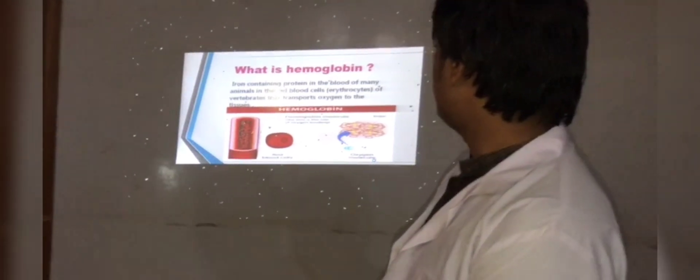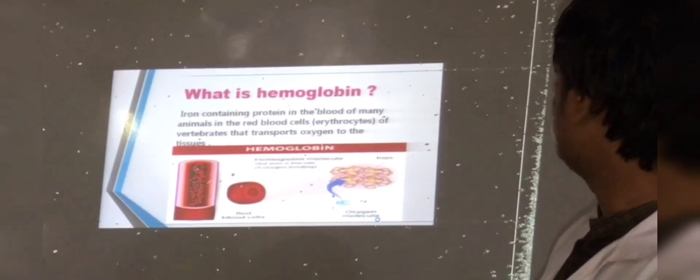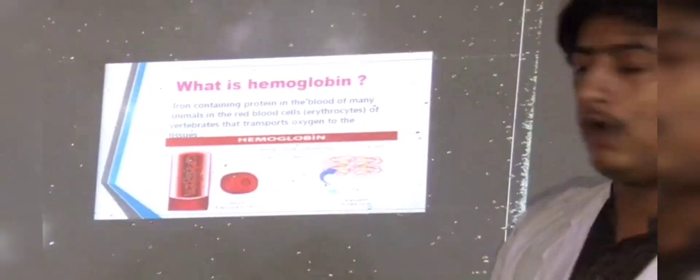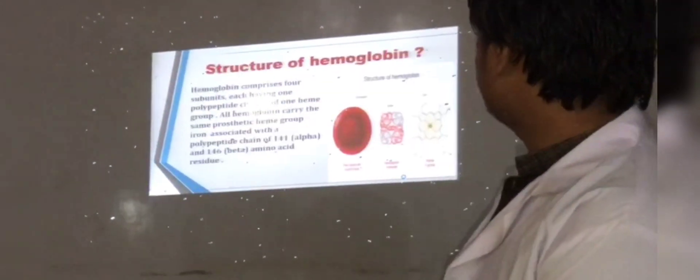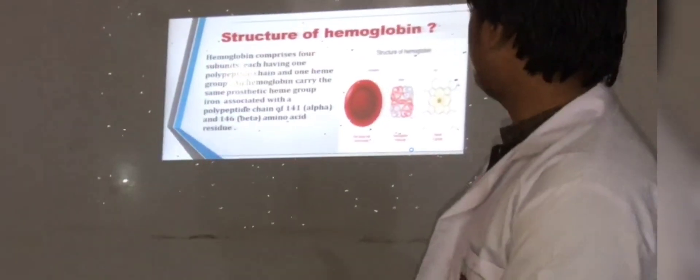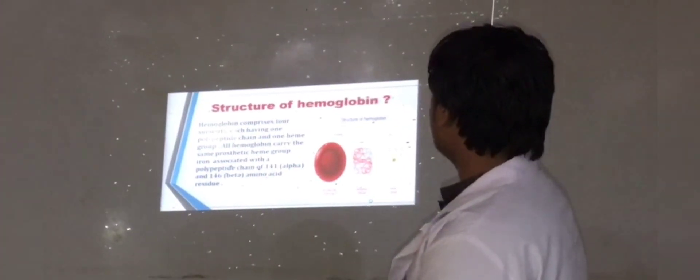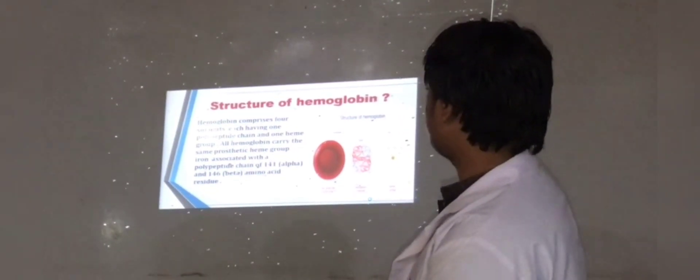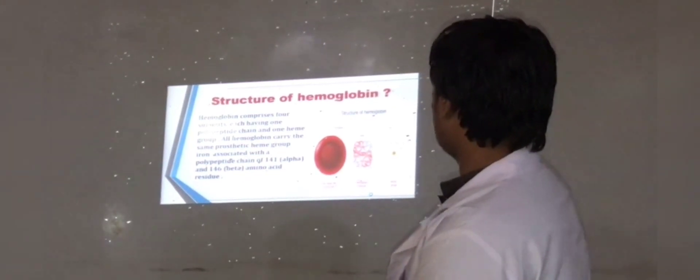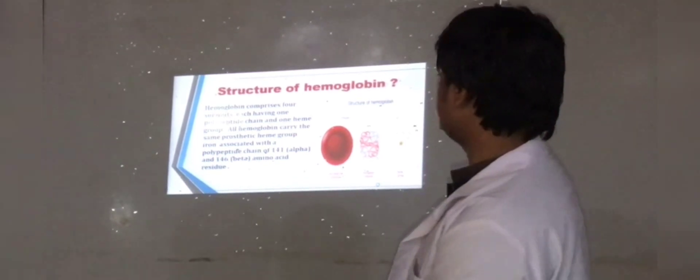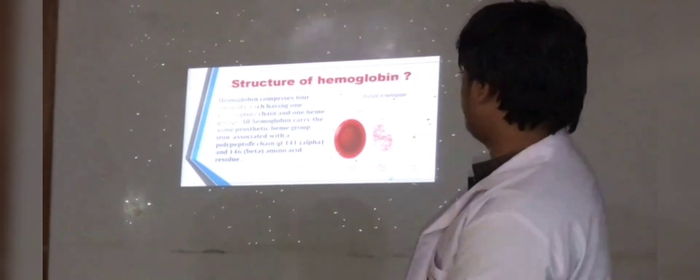What is hemoglobin? Hemoglobin is a protein in the blood of many animals, found in the red blood cells of vertebrates, that transports oxygen to the tissues. Hemoglobin comprises four subunits, each with one polypeptide chain and one heme group. All hemoglobin carry the same prosthetic heme group, iron associated with a polypeptide chain of 141 alpha and 146 beta amino acid residues.